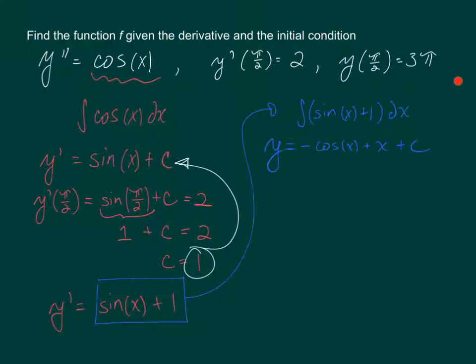So back up here to this information, y of pi over 2 is 3 pi. So what that means is if we know y of pi over 2, that is the same thing as writing negative cosine of pi over 2 plus pi over 2 plus C equals 3 pi.